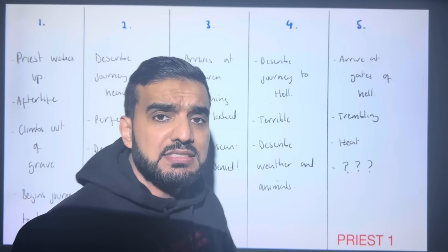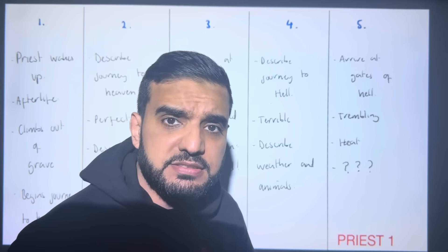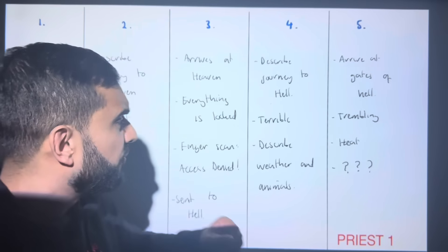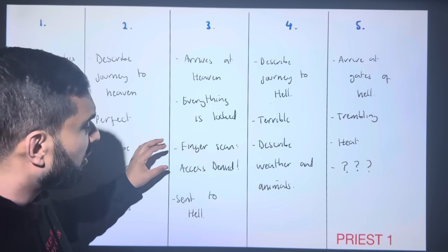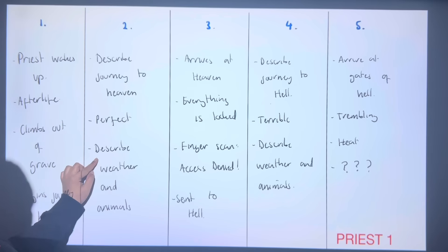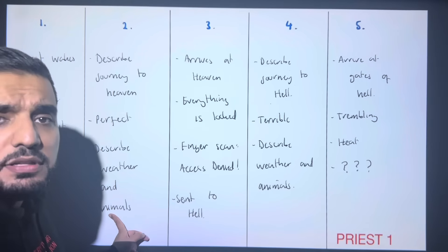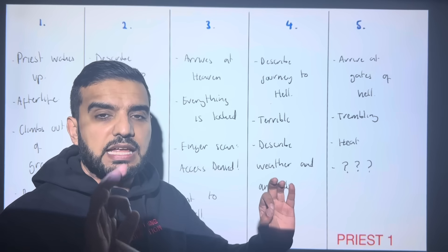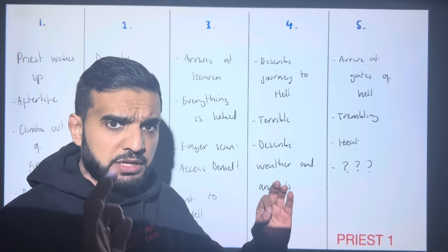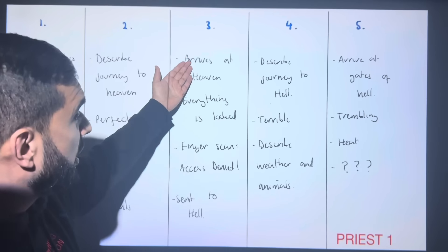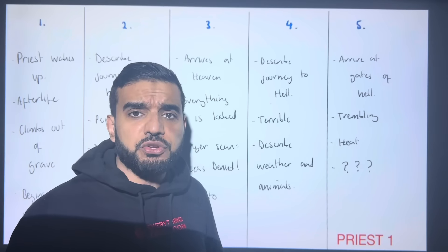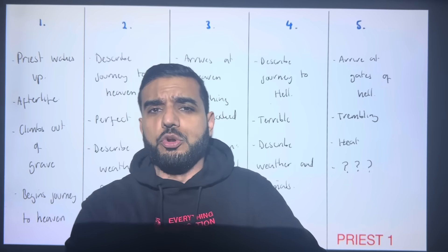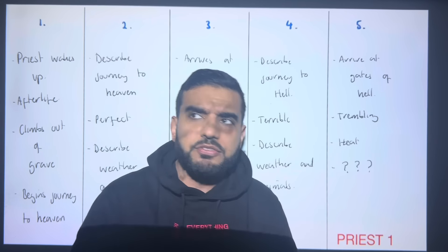In paragraph two, I describe that journey to heaven step by step, and I only focus on two things: the weather and the animals — but they are amazing. Everything is perfect. In paragraph three, you arrive at the gates of heaven but everything is locked. You're pulling the bars, you're knocking on the doors, no one's in.